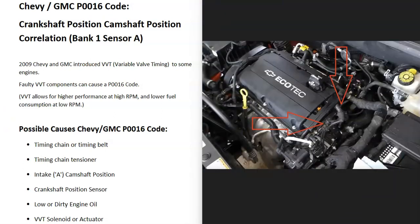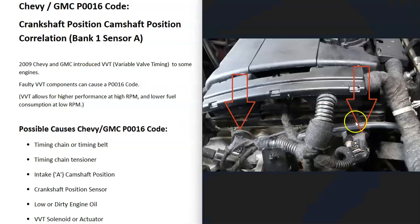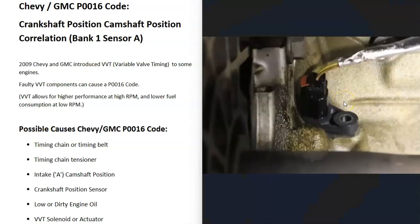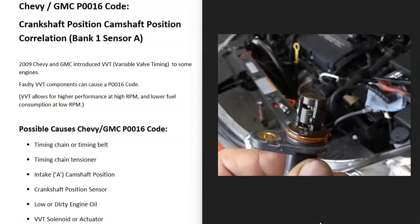Another thing that could cause this problem is a bad camshaft sensor or crankshaft position sensor. With this code, it's going to point to the intake camshaft position sensor, whose location can vary depending on the engine and year. For example, on this Chevy 1.8 liter engine, the intake sensor is located right here on the side of the engine. The crankshaft position sensor is located down lower on the engine by the crankshaft, though the exact location varies by make and year.